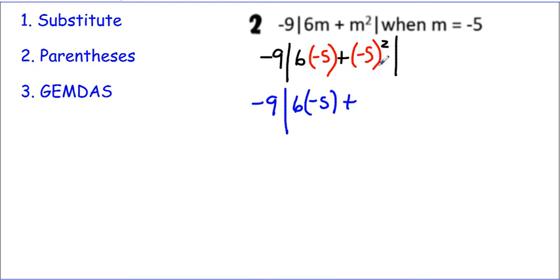Negative 5 times negative 5 is a positive 25. Now we're going to multiply within the grouping. Negative 30 plus 25.